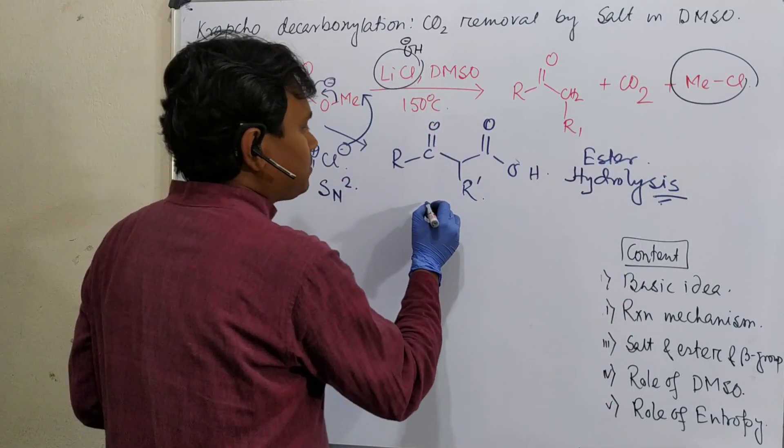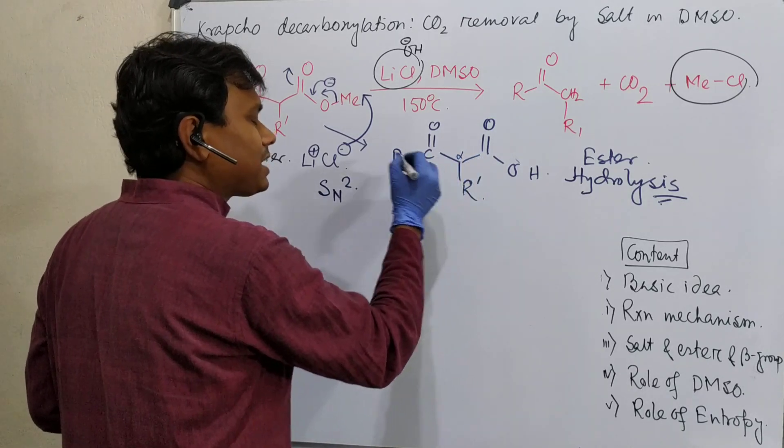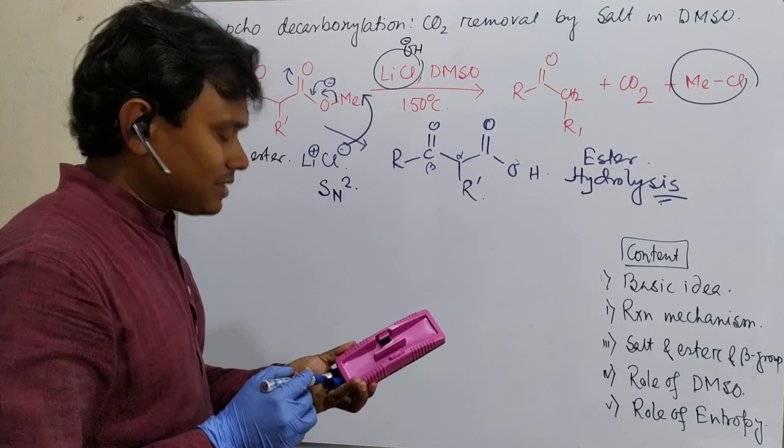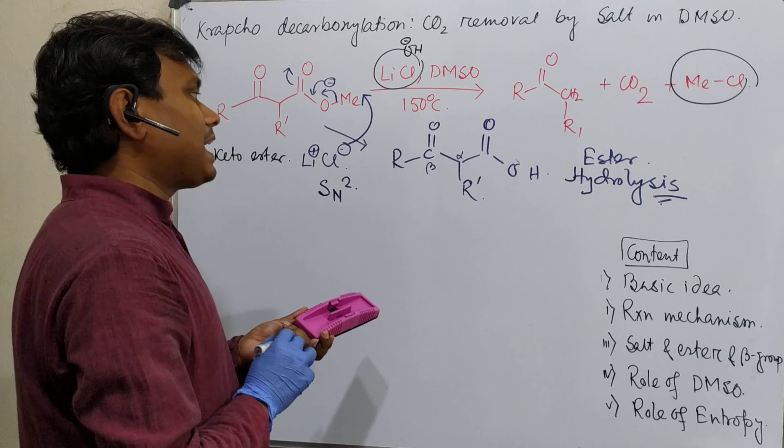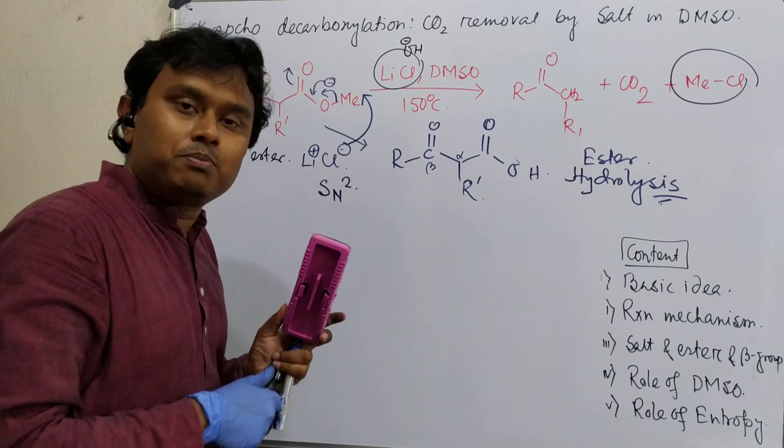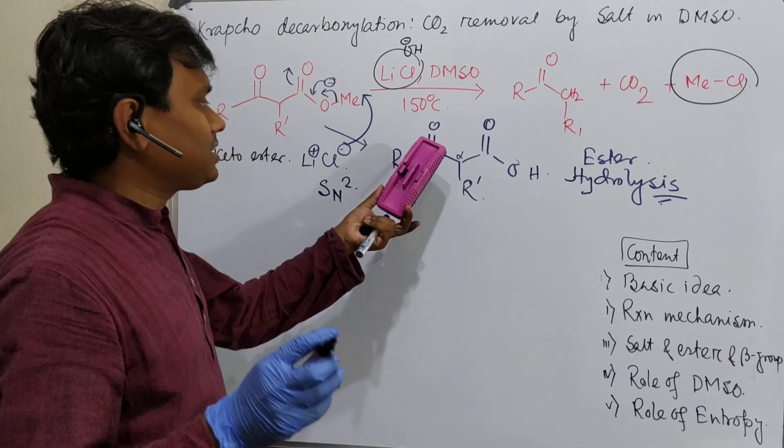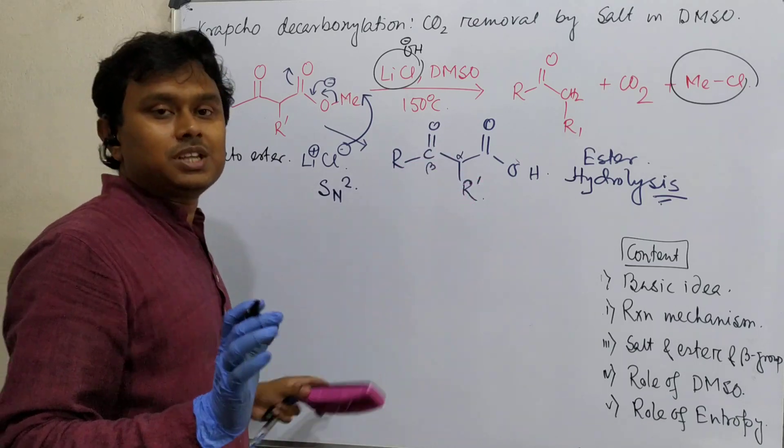Now in the next step, what is happening? This is alpha, this is the beta-ketoacid. And through a six-member transition state, decarboxylation can happen. So let me give you a very brief - for better understanding, please visit the dedicated video for decarboxylation of beta-ketoacids.